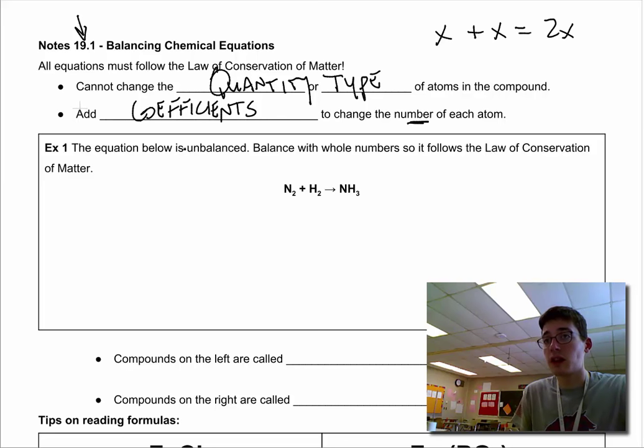So we have an unbalanced equation here. It is unbalanced. Always assume equations are unbalanced. So we're going to balance it with whole numbers so it follows the law of conservation of matter. And I know it's unbalanced because I have two nitrogens on the left in my reactants, but only one in my product. I've destroyed a nitrogen. I can't do that. It breaks the laws of the universe.